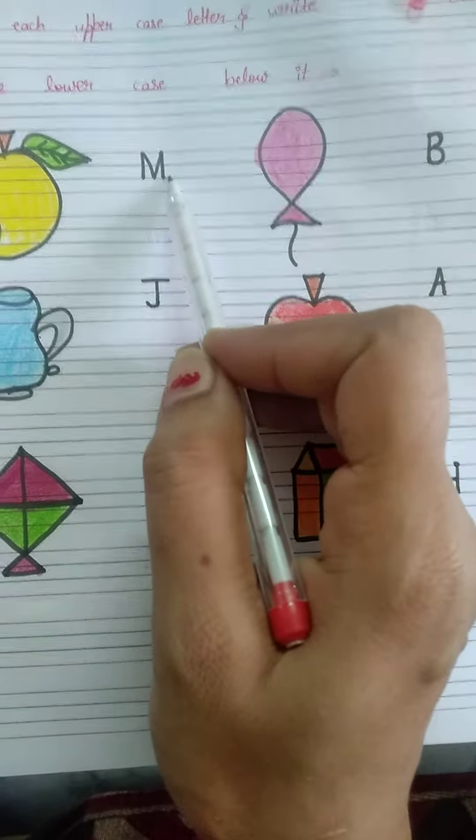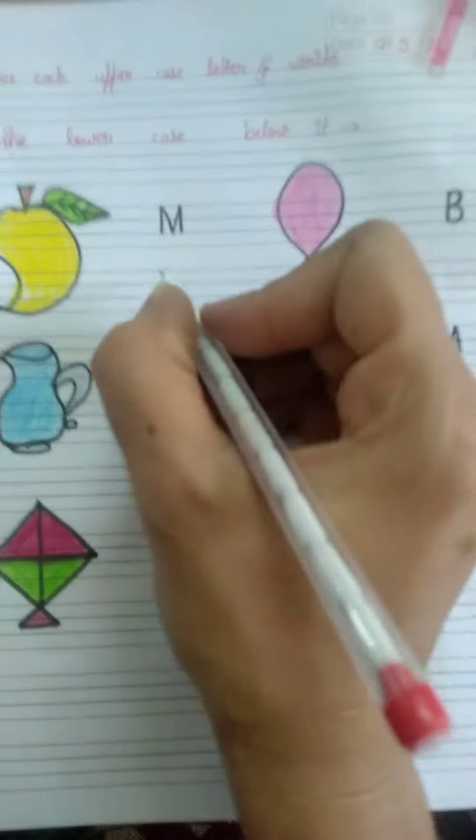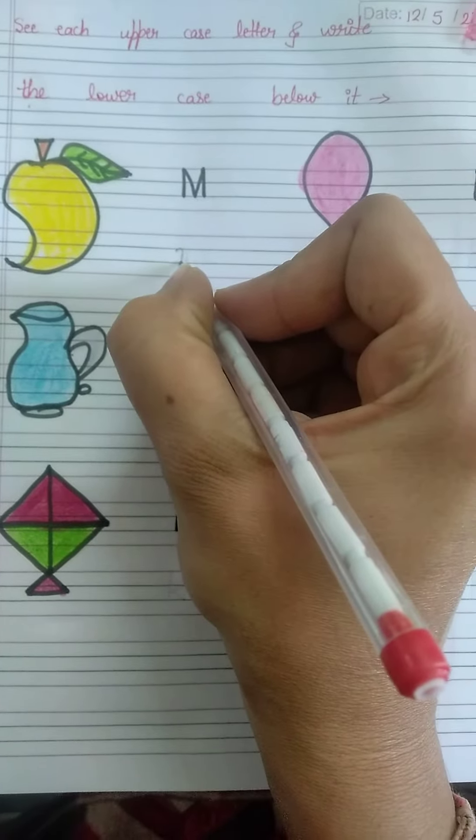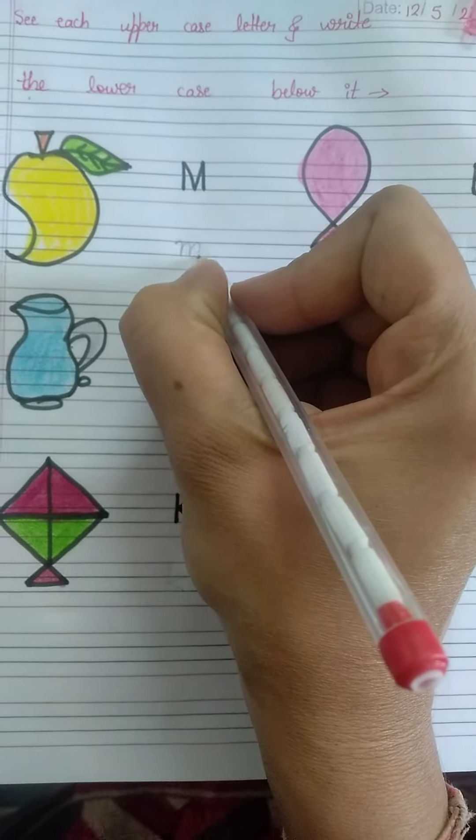You have to write lowercase letter, means small letters. M of mangoes. So you will write here small letter M. Curve, again curve like this, and curve with tail.